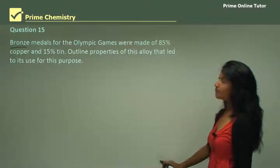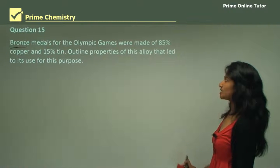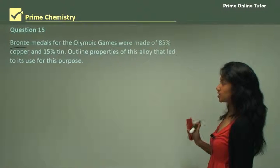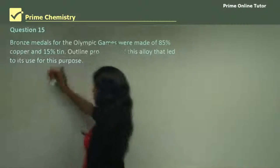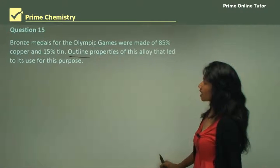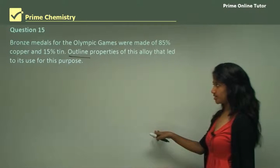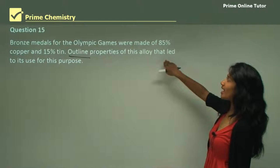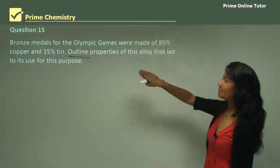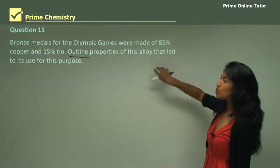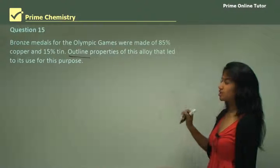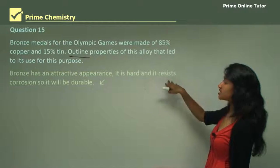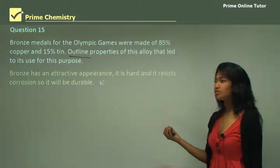Question 15: bronze medals for the Olympic Games were made of 85% copper and 15% tin. Outline the properties of this alloy that led to its use for this purpose. The keyword is 'outline,' and the given statement must be incorporated in your answer. Bronze has an attractive appearance, it's hard, and it resists corrosion. This makes it more durable, and medals need durability.